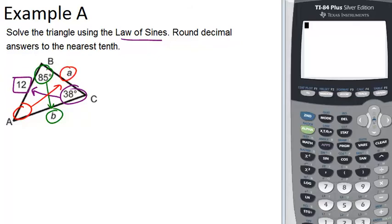So first let's solve for side B. What we're going to do is say sine of 38 degrees over 12, because those are a matching angle and side, must equal sine of 85 degrees over B.